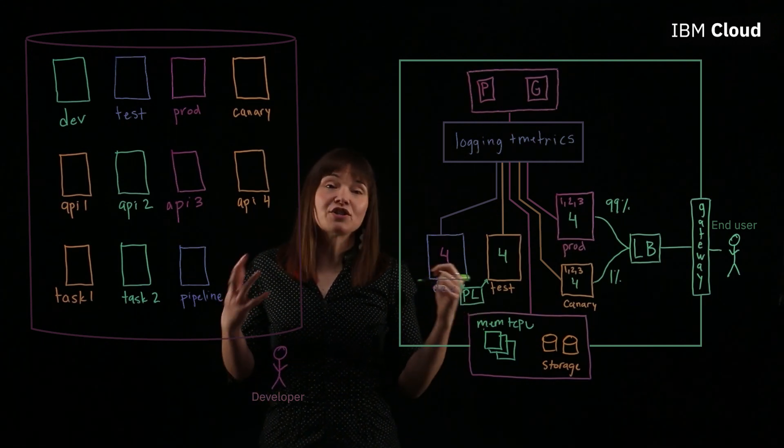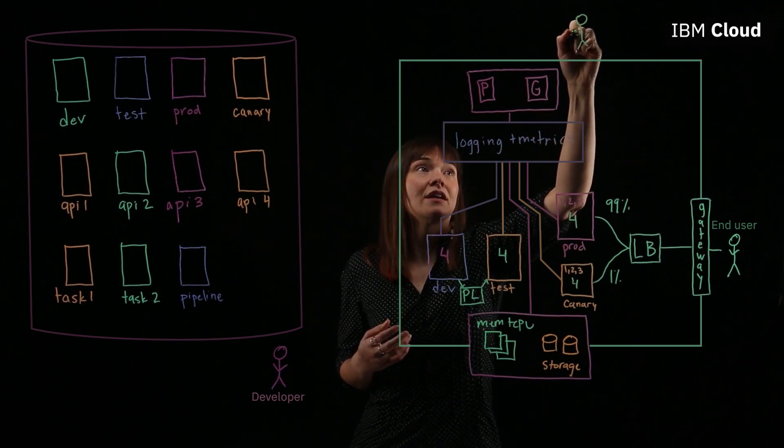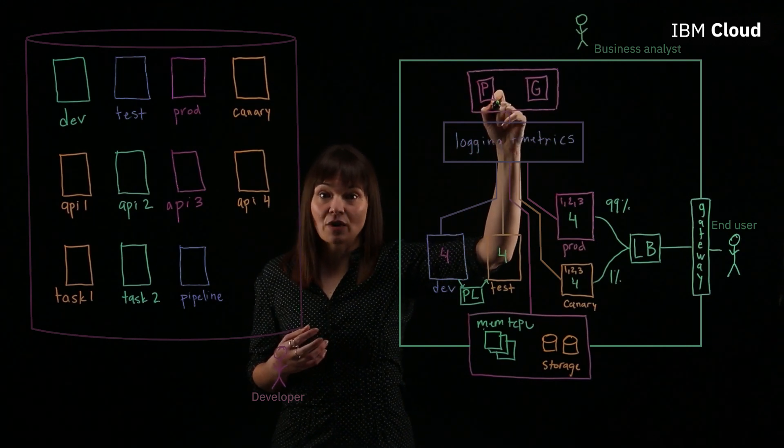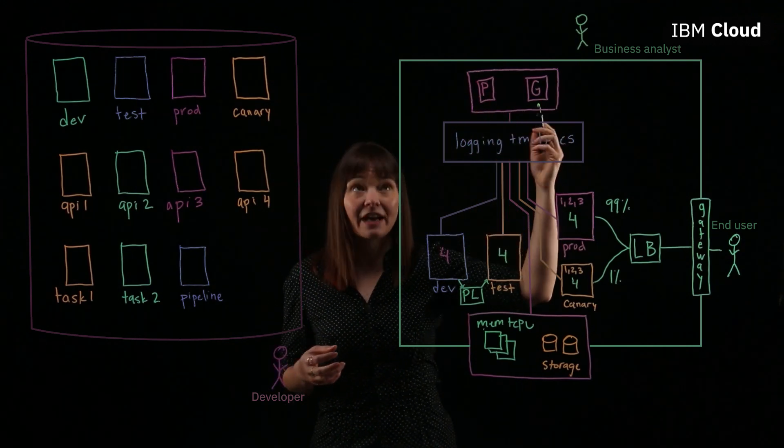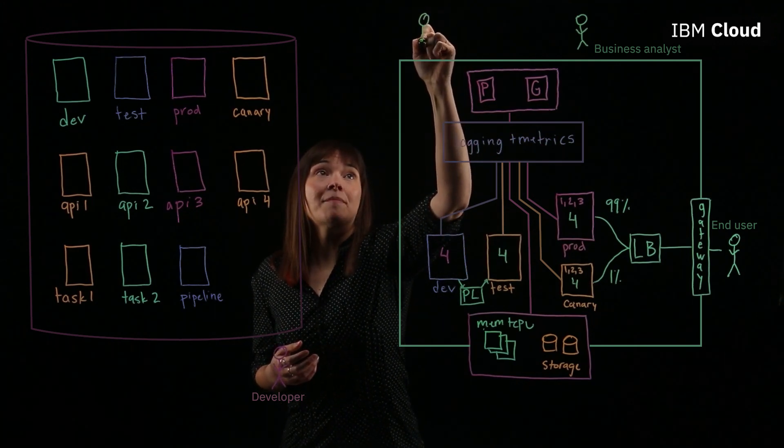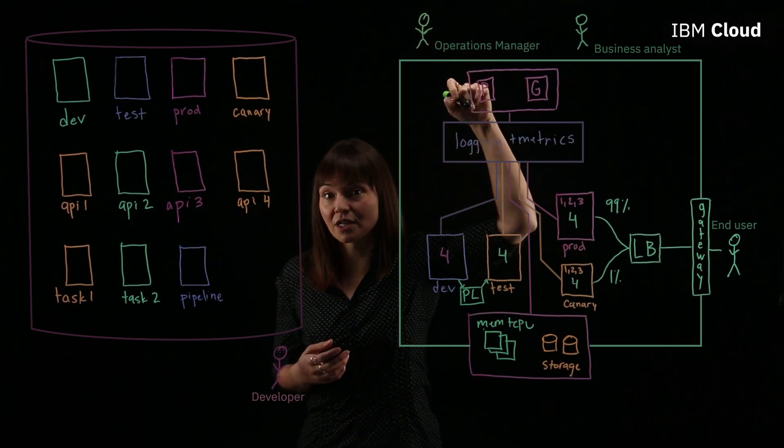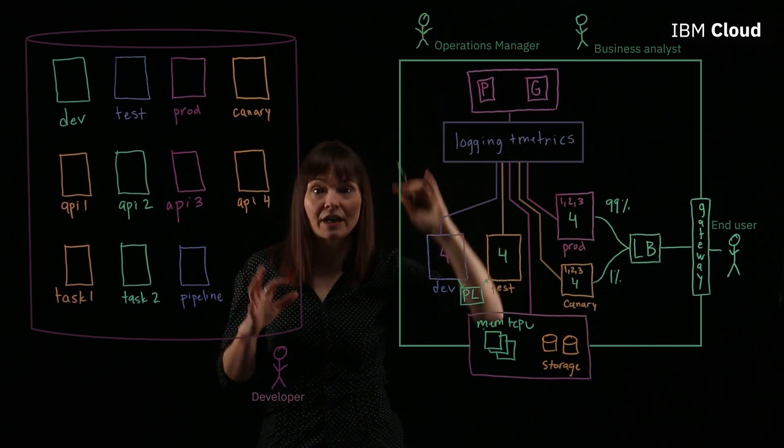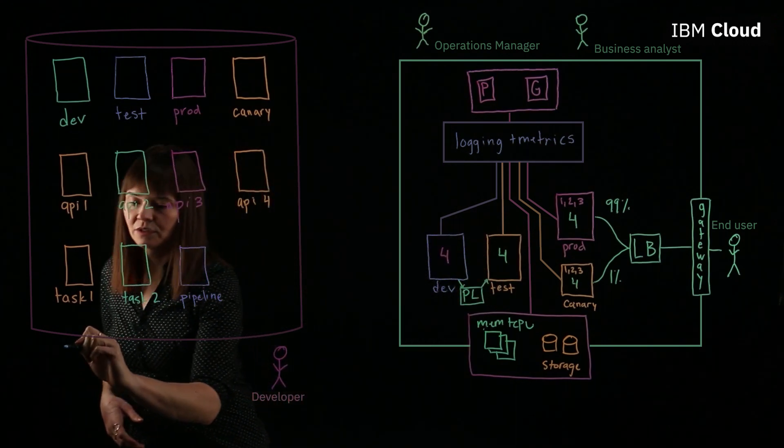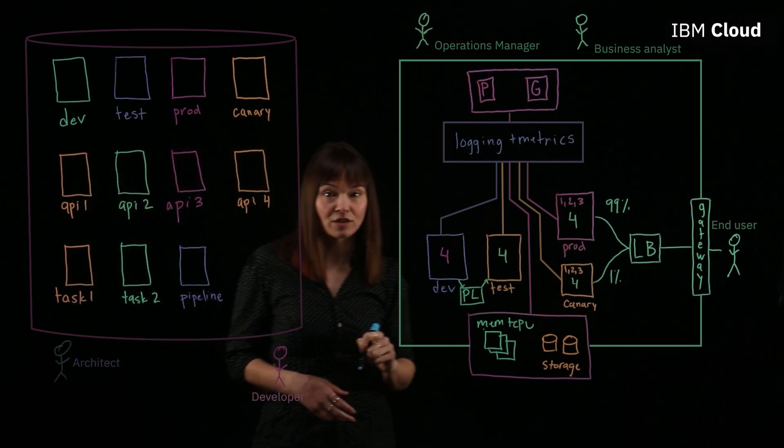So the players that are interested in the system would be a business analyst, for example. That person would definitely be interested in the graphics and the insights that the logging and the metrics provide. An operations manager would be interested in our logging and metrics, but also interested in the infrastructure as code and what's going on technically. And then we might have an architect too, who's keeping an eye on the source control and on the system as a whole.